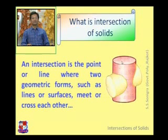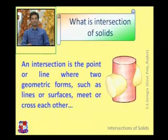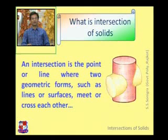Intersection is the point or line where two geometric forms such as lines or surfaces meet or cross each other. That is intersection.